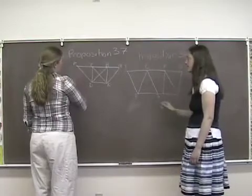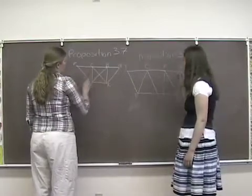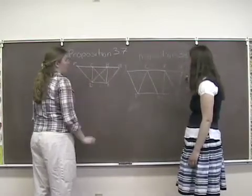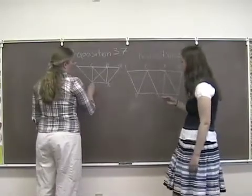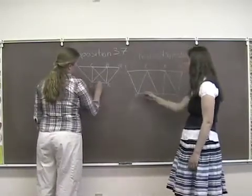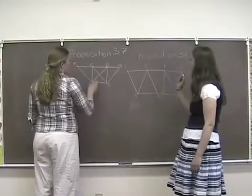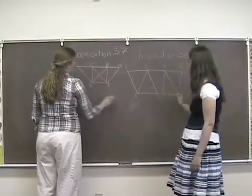Therefore, each of the figures FDAC and BDKG is a parallelogram, and they are equal. For they share the same equal basis DK and lie between the same parallels.